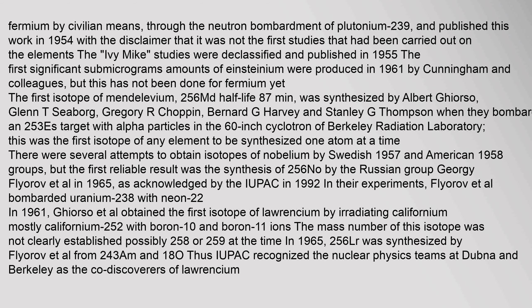The Ivy Mike studies were declassified and published in 1955. The first significant sub-microgram amounts of einsteinium were produced in 1961. The first isotope of mendelevium, 256Md (half-life 87 minutes), was synthesized by Albert Ghiorso, Glenn T. Seaborg, Gregory R. Chopin, Bernard G. Harvey, and Stanley G. Thompson when they bombarded an 253Es target with alpha particles in the 60-inch cyclotron of Berkeley Radiation Laboratory. This was the first isotope of any element to be synthesized one atom at a time. Several attempts to obtain isotopes of nobelium were made by Swedish (1957) and American (1958) groups.